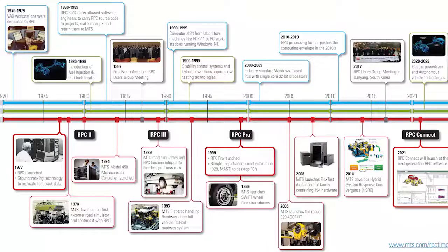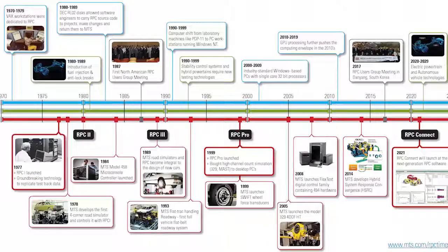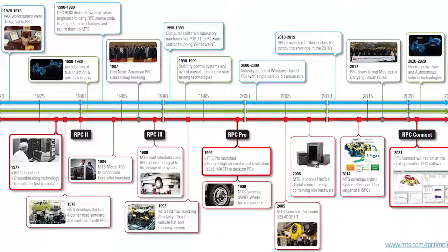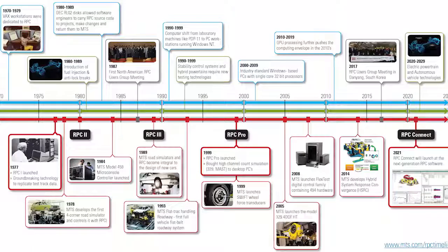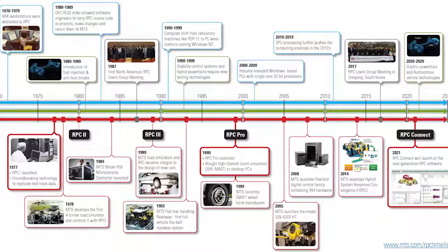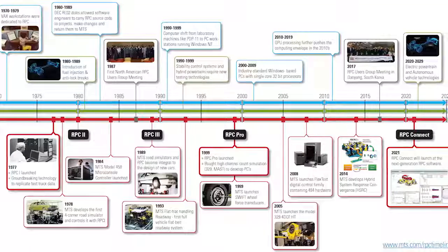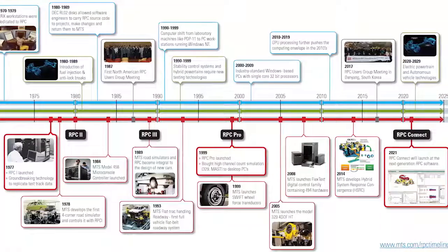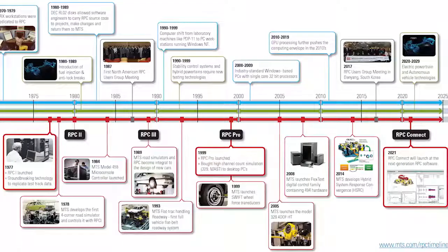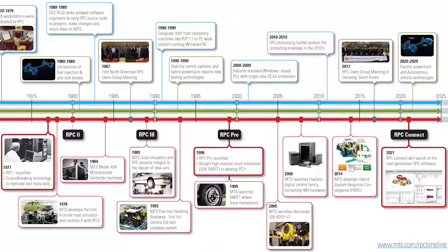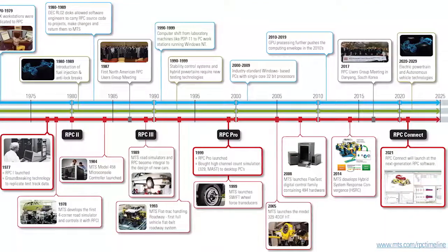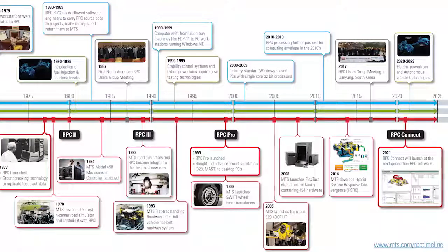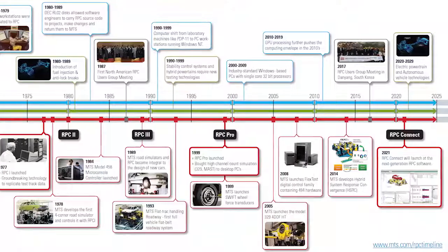RPC Pro established Windows compatibility and ushered in the era of flex-test digital controls. This made possible the 6-degree-of-freedom road simulators and hexapod mass systems critical for testing today's increasingly complex vehicles. Like the software itself, RPC user group meetings also caught on worldwide.